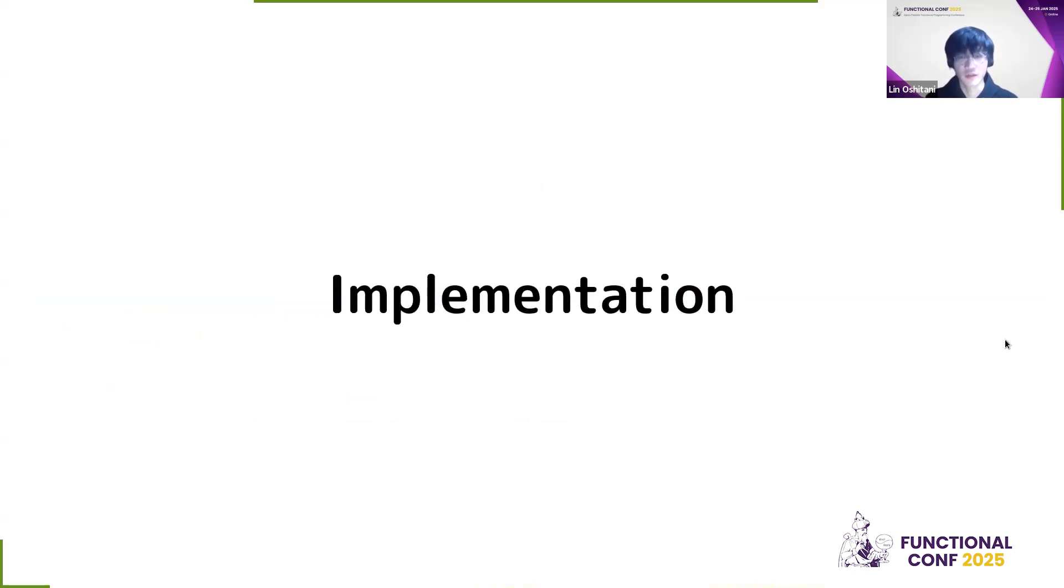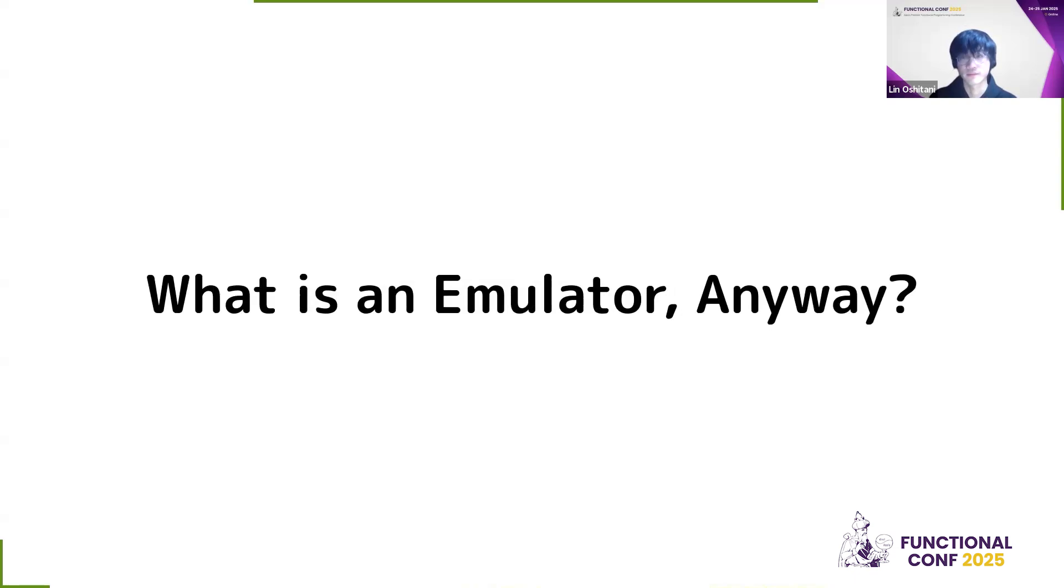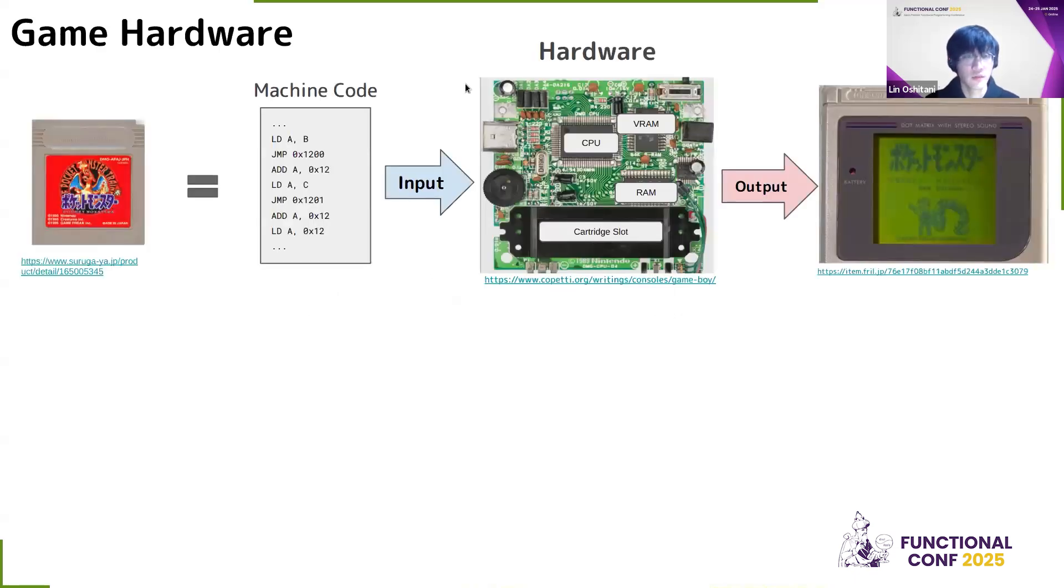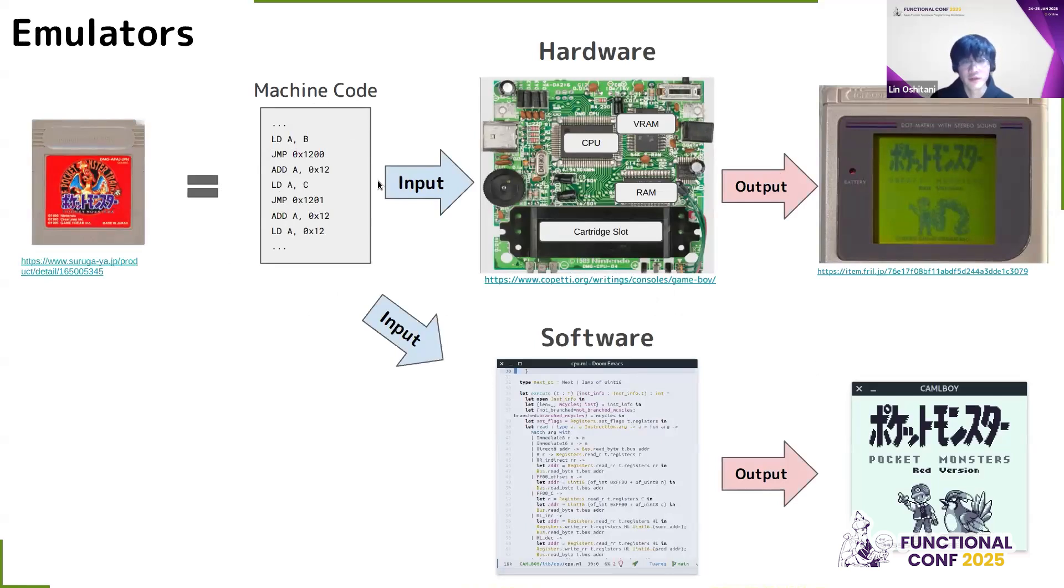Let's look at the implementation. But before that, what are emulators anyway? This is how Gameboy hardware works. First in the cartridge, you have machine code. And this machine code is feeded as an input to the hardware. Now the hardware will process the machine code and then have an output. The output will be a screen or sound, and so on. So what is emulators? Emulators is you take the exact same machine code, but instead of feeding it to hardware, you feed it to a software. The software will output the screen and the sound. So because this software emulates what the hardware does, it's called an emulator.